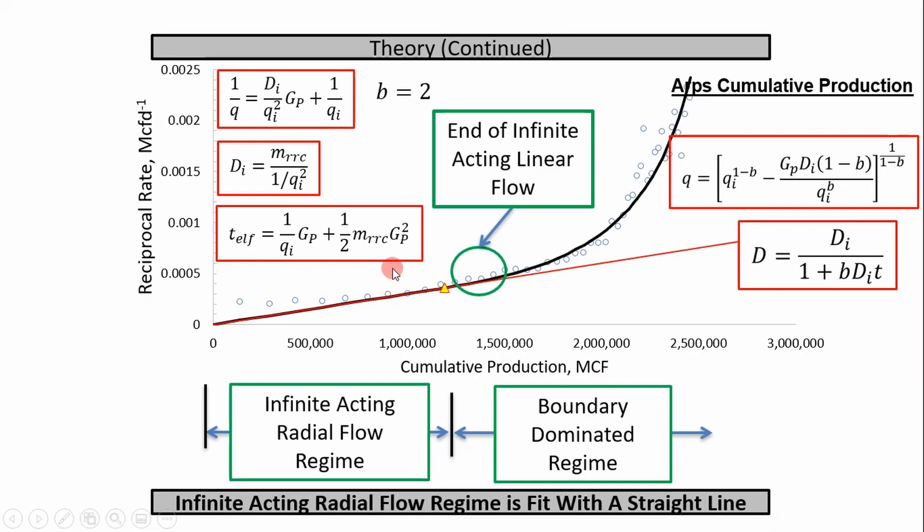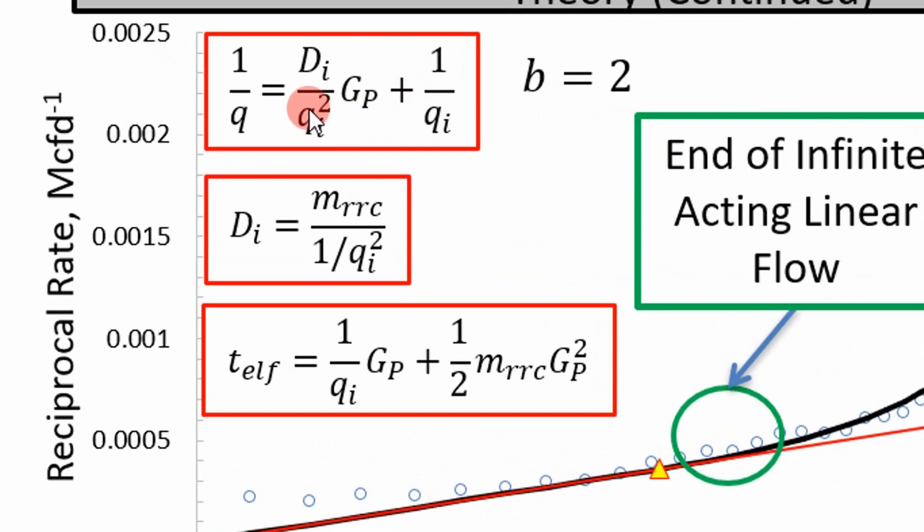So the basis behind this approach can be found in literature, but it's really simple. It's basically using ARPS equations. So for the infinite acting region, we're assuming that this straight line right here has a b equal to 2. So if you pull your ARPS equations like this equation right here and some others, you can actually derive this by substituting b equals 2 into here and solving for reciprocal rate.